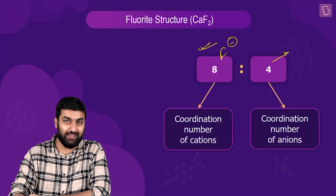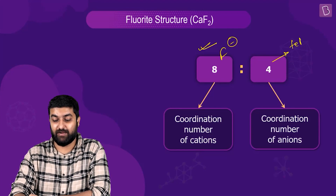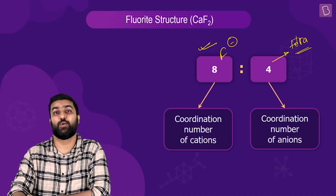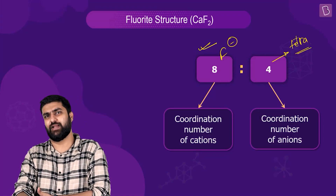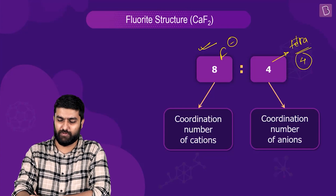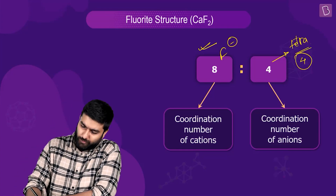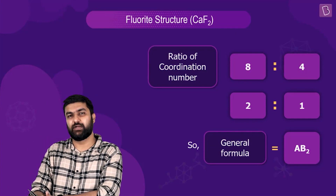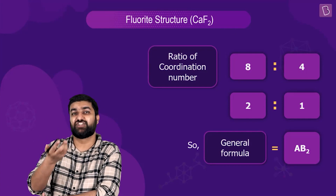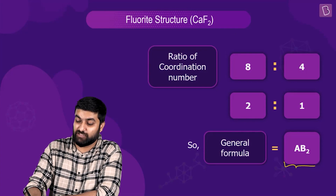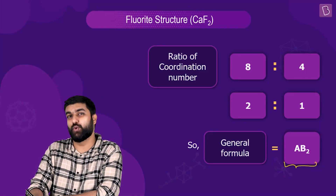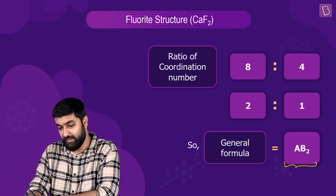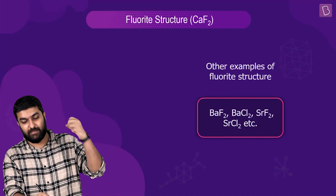The anion is placed in a tetrahedral void, and the coordination number of a tetrahedral void is four — so F⁻ has a coordination number of four. We can flip the 2:1 logic to generate the formula, and essentially we get AB₂ here.